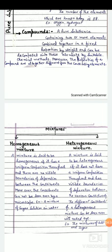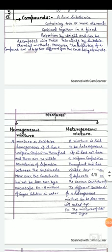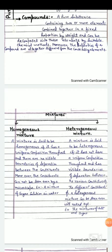Second, heterogeneous mixture. A mixture is said to be heterogeneous if it does not have a uniform composition throughout and has visible boundaries of separation between the various constituents. The different constituents of a heterogeneous mixture can be seen even with naked eye. Example, the mixture of salt and sugar.